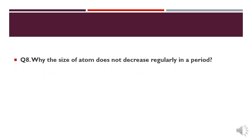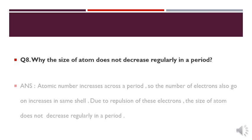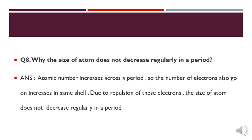Question number 8: why does the size of an atom not decrease regularly in a period? As atomic number increases across a period, the number of electrons also increases in the same shell. Due to the repulsion of these electrons, the size of an atom does not decrease regularly.